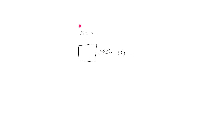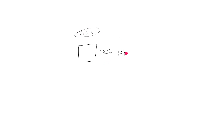We already saw this when we did the hybrid main conclusion slash most strongly supported. With that type of hybrid question, everything in the stimulus was utilized to arrive at some kind of conclusion. You may see that in proper MSS as well — that is one subtype of most strongly supported question where all the information gets utilized, driving towards supporting the right answer choice. That's one subtype.